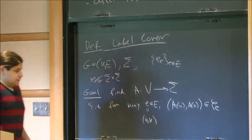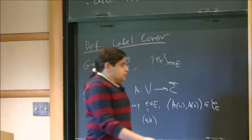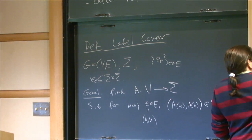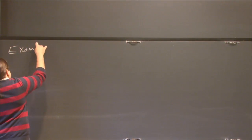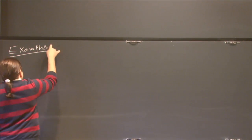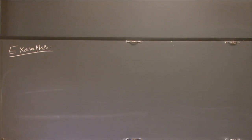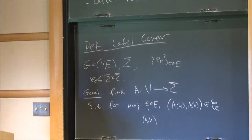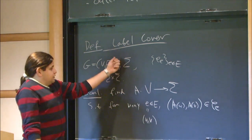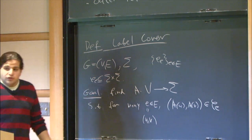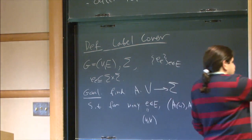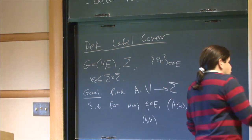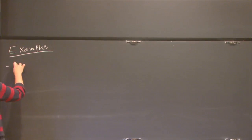So this is the basic definition. Let's see some examples. This is a wide variety of problems. You can think about sigma equals zero-one for a bit of size two, and there we have a very well-known example known as MaxCut.